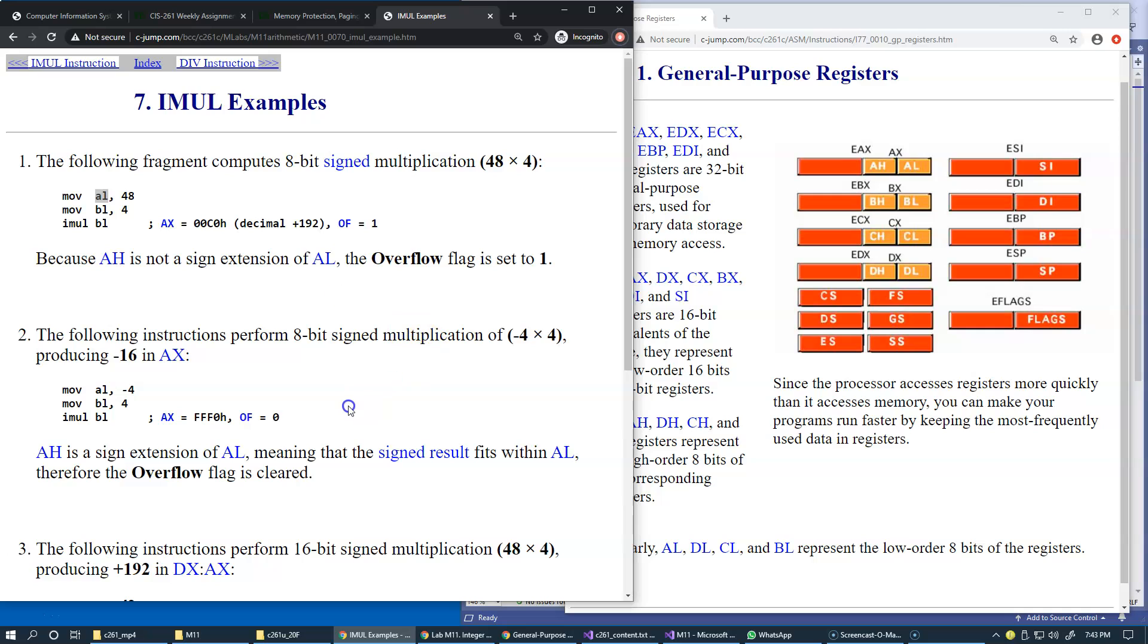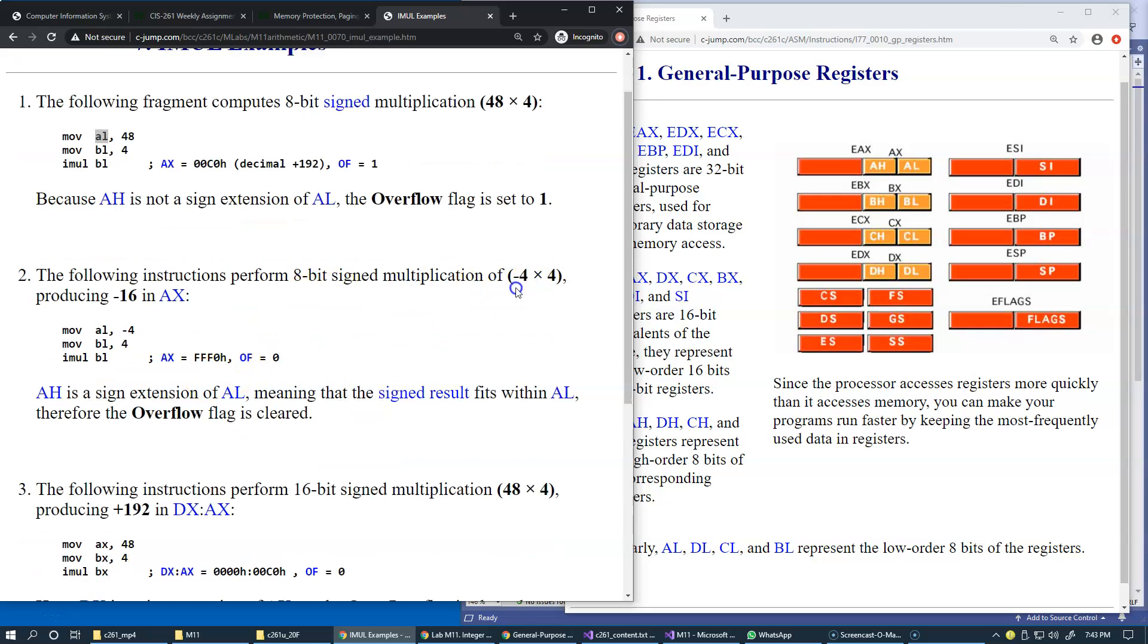Another example: we're multiplying minus 4 by 4, which should produce minus 16. Again using AL and BL, so result will be in 16-bit register. The result is really 16 which is F0, but because it's assumed to be a valid result in entire AX register, the sign is extended into 16-bit.